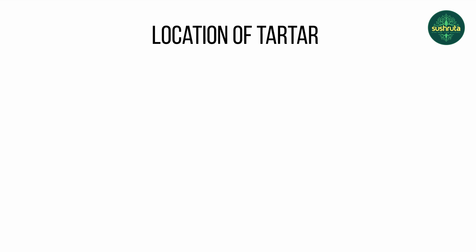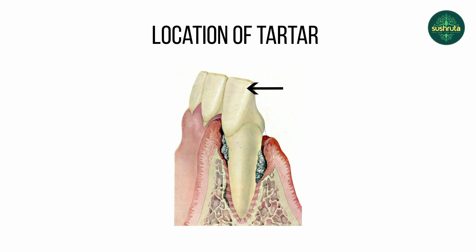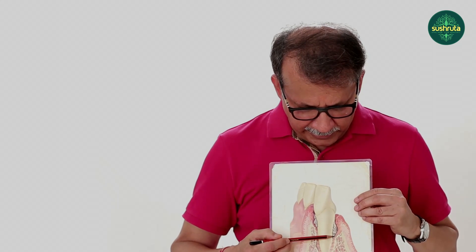Now how does it happen? Why does it happen even if sometimes you go to a dentist and clean it? Looking at this picture — this is the crown, that is what you see in the mouth, this is the root, and between the root and the gingiva you can see tartar here. Usually teeth get cleaned superficially, but there is a terminology called deep cleaning. If that is not done, the tartar starts accumulating more and more, there is swelling in the gum, the bone recedes, and you get periodontitis.